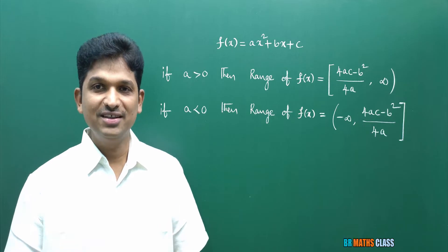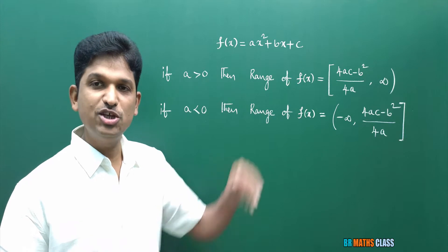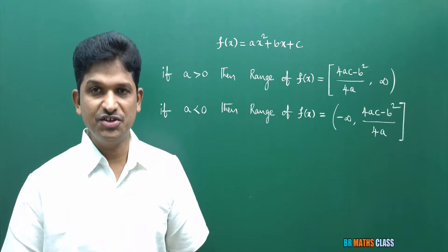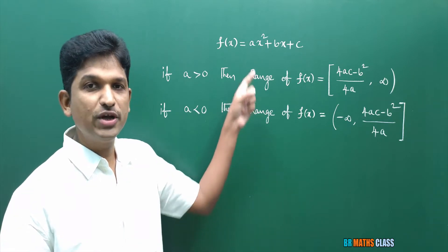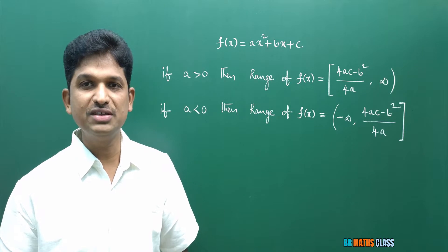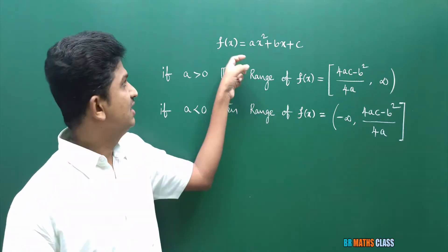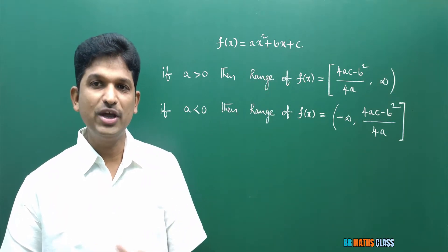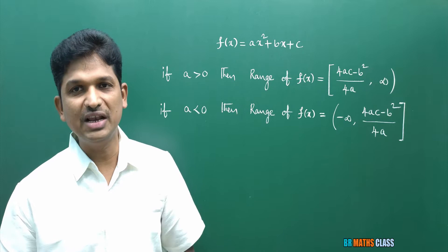To understand this class, you need to know this theory. This theory we are getting from the maxima minima chapter. By using the second derivative test, you can get these formulas. Don't worry, I am not going to explain all those things. I will try to explain as simply as possible. If the function F of X is AX square plus BX plus C, then to calculate the range of the function F of X, two cases will arise.